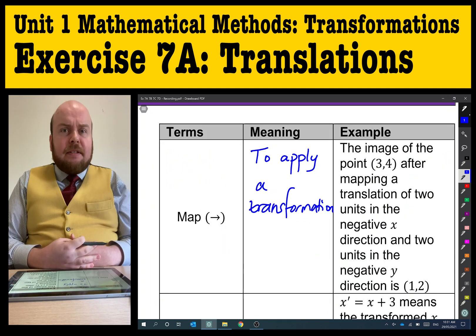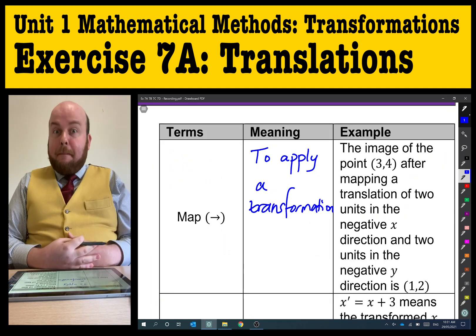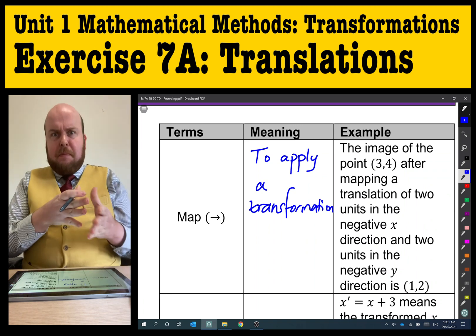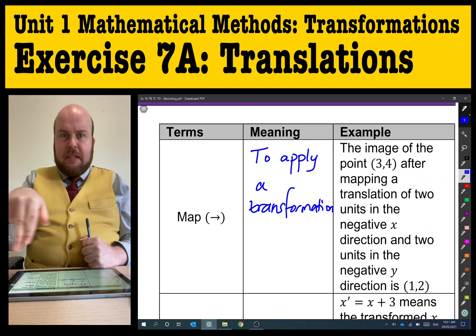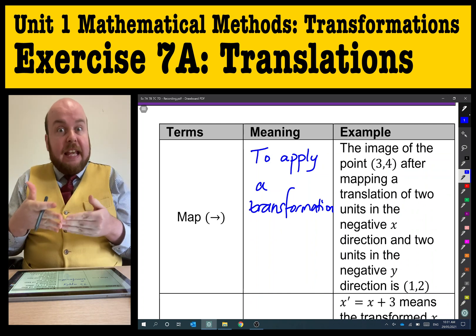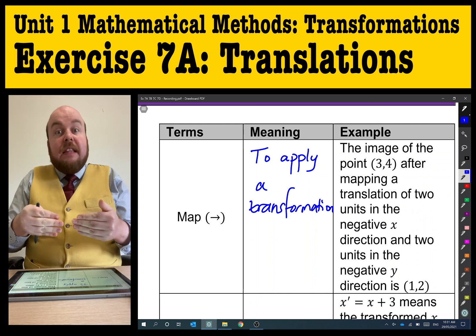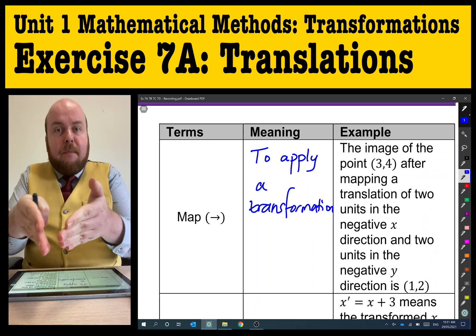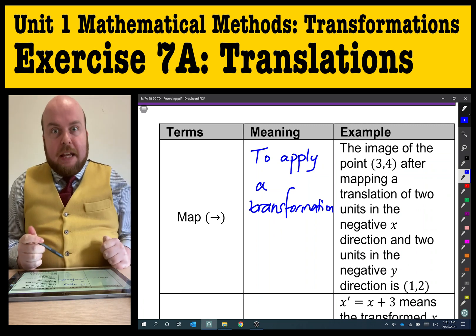Map. In this case, map is a verb. To map something, if you can imagine when we're looking at a map, we're seeing where we need to go. To map, as in the verb, as in the action, means that I'm doing the steps. I'm applying the transformation to get to our final image.